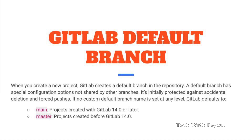In GitLab 14.0 or later, the default branch is going to be called 'main'. If you have an earlier version than 14.0, once you create the project the default branch will be called 'master'. In GitHub they also call it 'main', and in GitLab they also call it 'main' — so people already familiar with Git will know this.